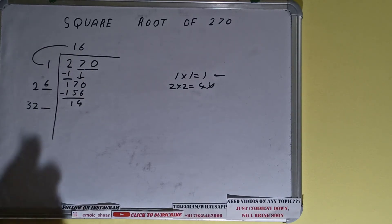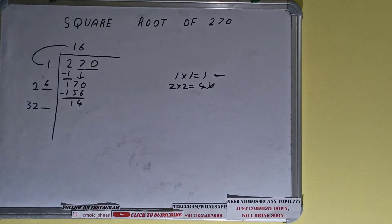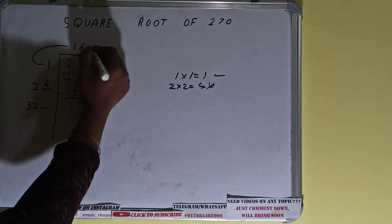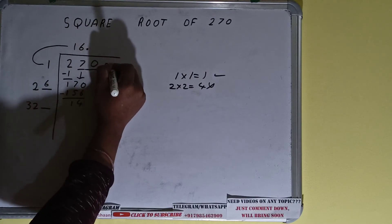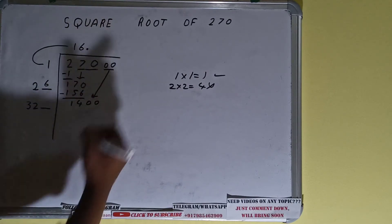Over here we need to make this number big so that we can divide. So we need to bring the next pair down, but we don't have any more pairs. So what we'll do is we'll put decimal. Once we put decimal we can bring pairs of zeros down and the number will become as 1400.